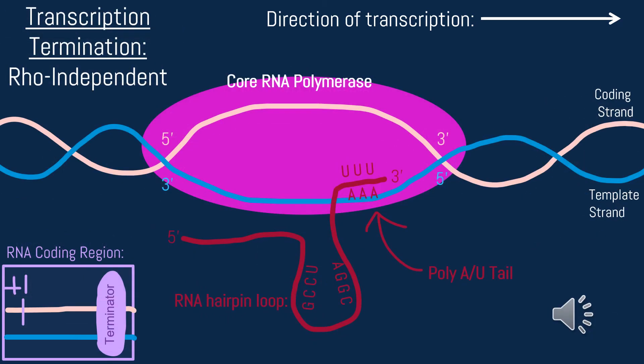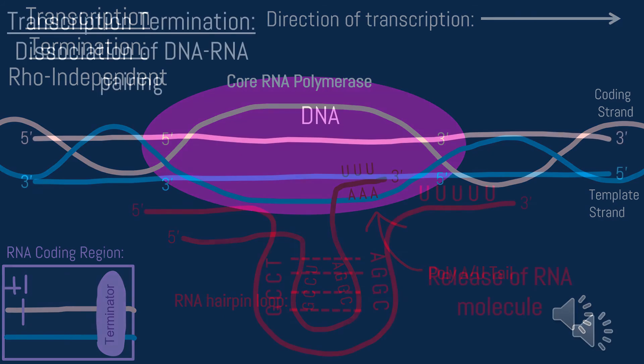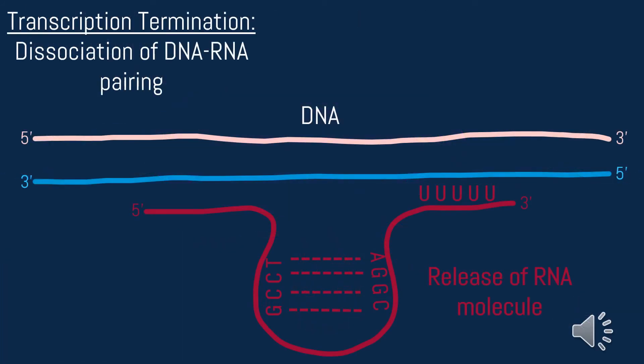Lastly, we have the process of Rho-independent termination. As the RNA molecule continues to grow, it will eventually form a hairpin loop made from inverted repeats. This signals RNA polymerase to terminate transcription. The poly-AU tail made of adenine and uracil bonds is what separates DNA from RNA. Now we've come to the end of the transcription termination process and can see the dissociation of DNA from RNA as the RNA hairpin molecule is released.